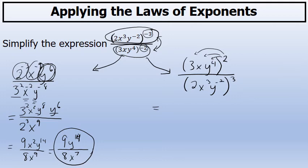First, three to the second power is nine. Then I'll also raise x to the second power, and y to the fourth to the second power. A power to a power means I should multiply those exponents.